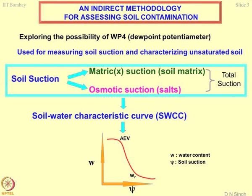This work was done by Dr. Sridip, my PhD scholar. This is where we use the possibility of WP4. WP4 is an instrument known as a dew point potentiometer. When you come for your laboratory experimental geotechnics session, you will be using this equipment to determine suction of the soil. I thought I will cover it here so that you can better follow what you do in the lab.